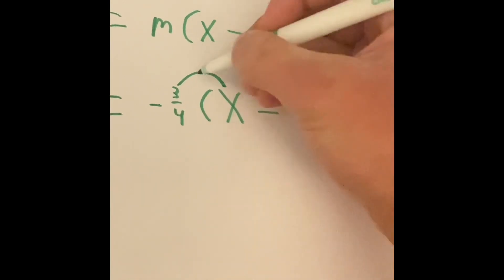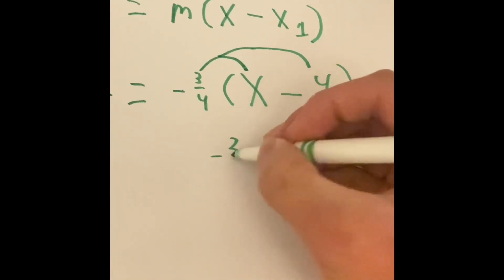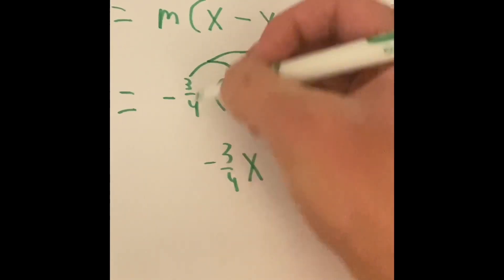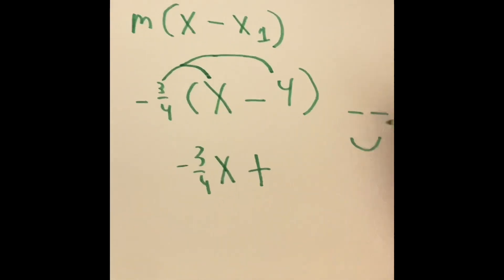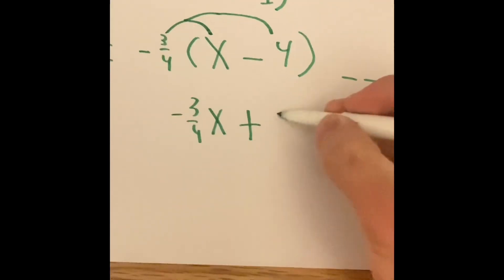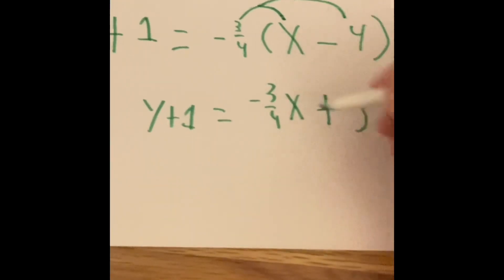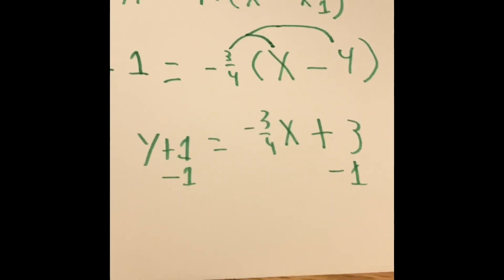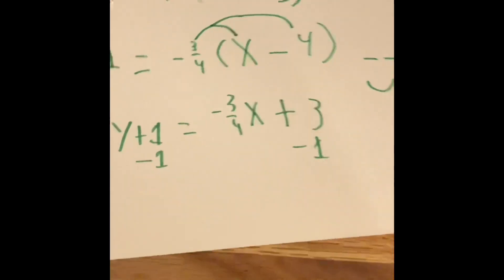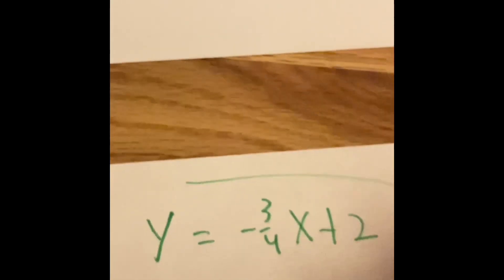Negative 3 over 4 multiplied by x, and negative 3 over 4 multiplied by negative 4. We get negative 3 over 4 x, and since a negative times a negative is positive, negative 3 over 4 times negative 4 gives us positive 3. The equation becomes y plus 1 equals negative 3 over 4 x plus 3. We subtract 1 from both sides and get y equals negative 3 over 4 x plus 2. This is our new slope.